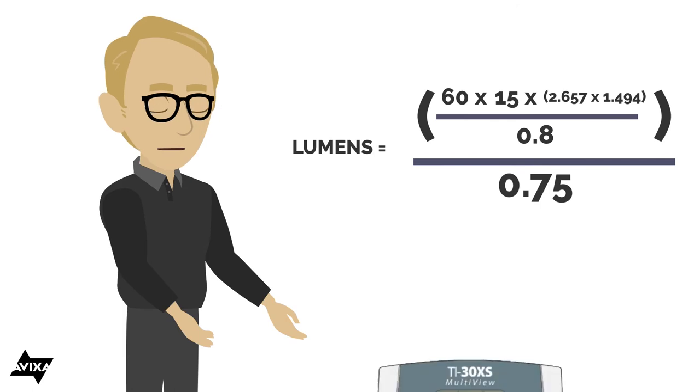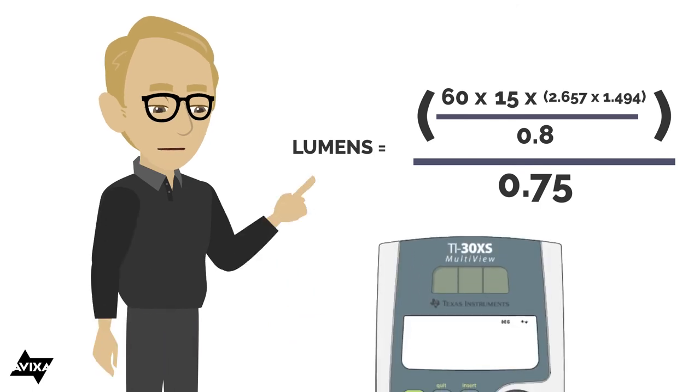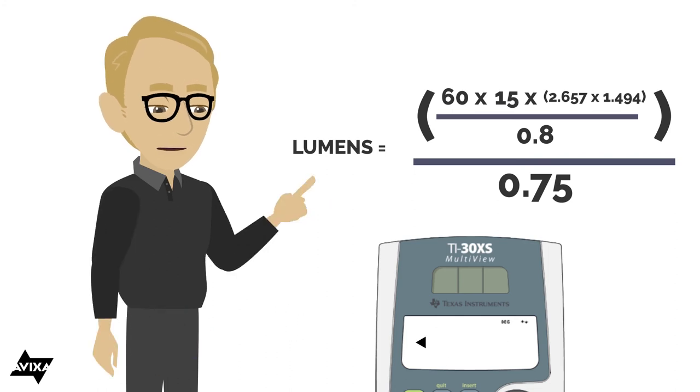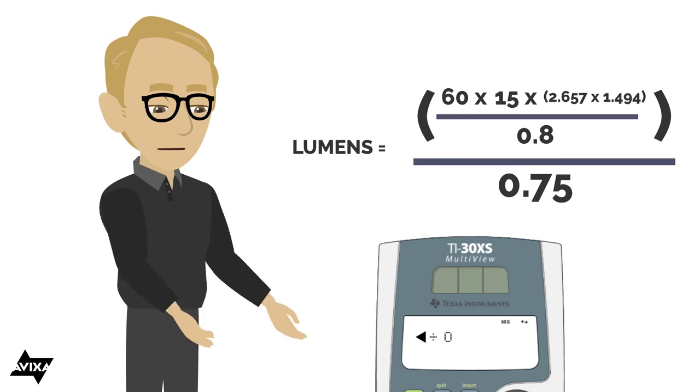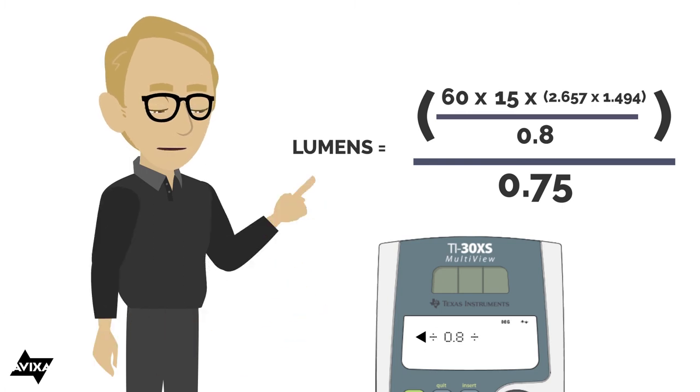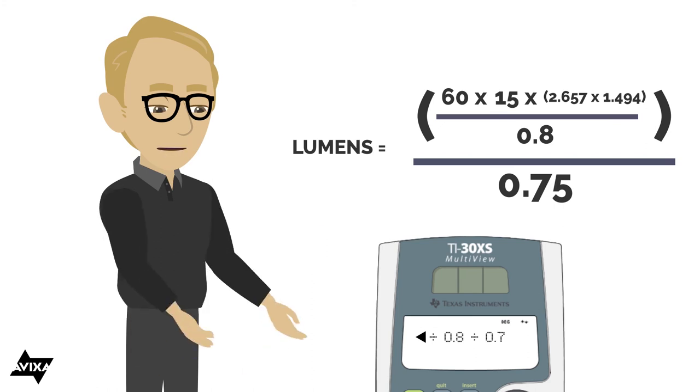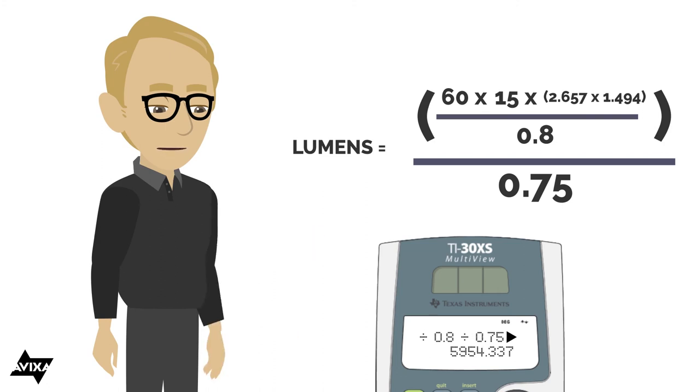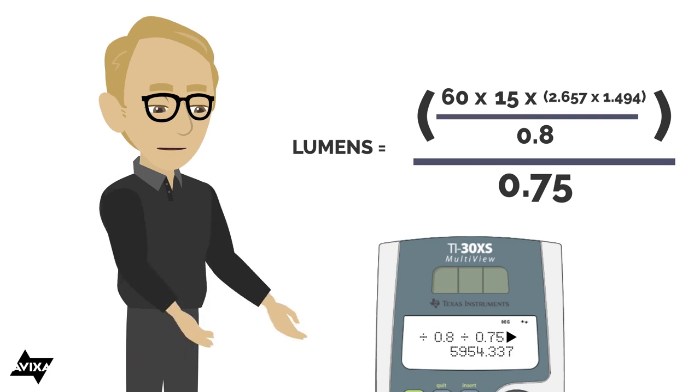Let's enter all this into our calculator and let's see what we get. So 60 lux times 15 for contrast ratio times, and let's open up the paren here. 2.657 meters times 1.494 meters. Close the paren. Divide by 0.8 because we're doing a gray screen here, something less than one, and divide by 0.75, the derating percentage. Hit the enter key in the lower right. It tells us that what we're looking for, 5954.337 lumens or practically speaking a 6,000 lumen projector in this particular case.